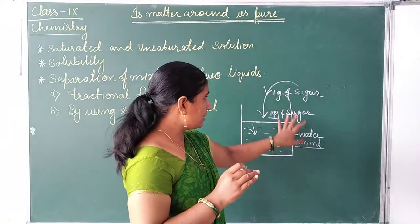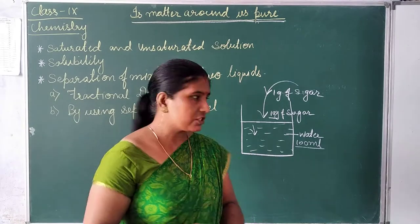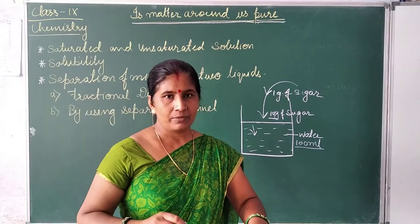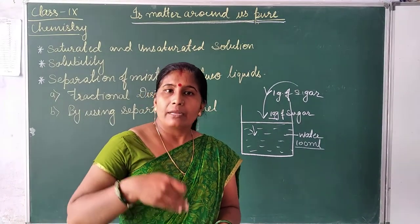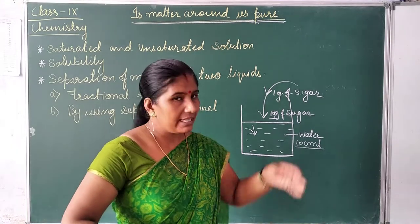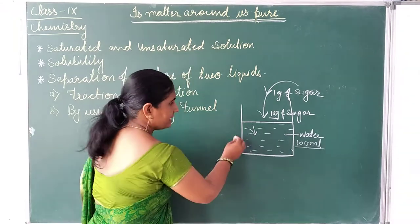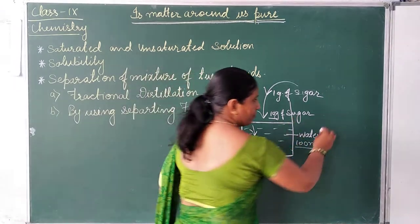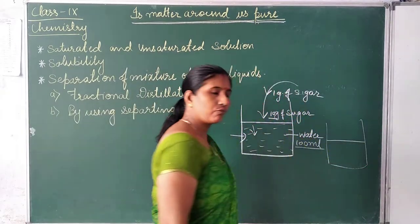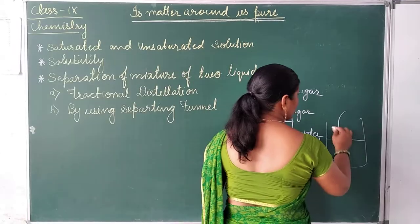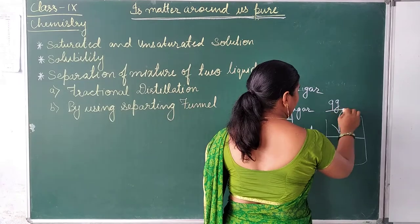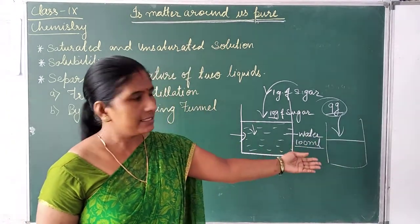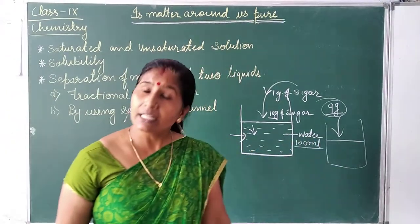This means the maximum amount of solute that 100 milliliters of water is capable of dissolving has been reached. We are unable to dissolve more solute in this solution, so we call it a saturated solution. In another case, if we have 100 milliliters of water and put only 9 grams of sugar, we are still able to dissolve more sugar. That is called an unsaturated solution.